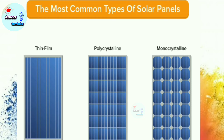Next we will compare the polycrystalline solar panel. If we look at the grid lines, the individual cells are arranged together in one arrangement. That's why we can identify the individual cells — that's why they are not uniform like monocrystalline. This panel has medium efficiency, around 16 to 18%.